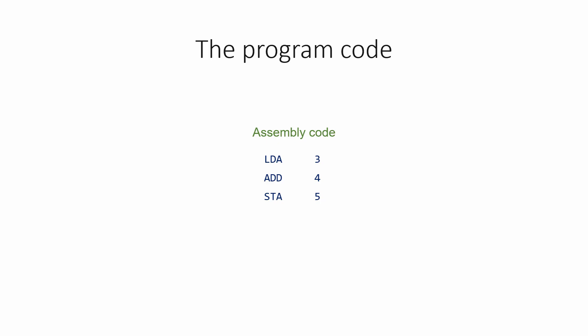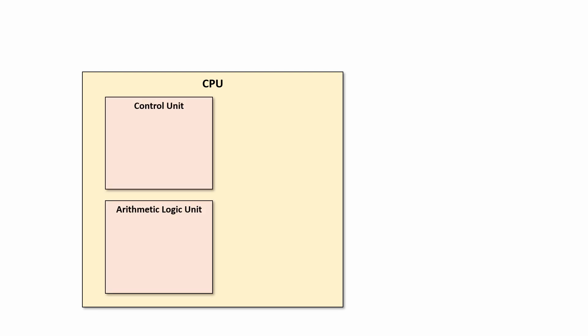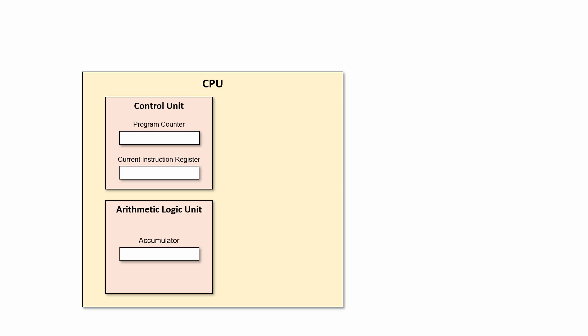So let's visualize these instructions being executed and look in detail at what happens during the fetch-decode-execute cycle. We're going to need a central processing unit with a control unit and an arithmetic and logic unit. The program counter and the current instruction register are located inside the control unit. The arithmetic and logic unit contains the accumulator. We also have the memory address register and the memory data register. Where these are depends on the design of the CPU, and we're really only interested in what these registers do, not exactly where they are.